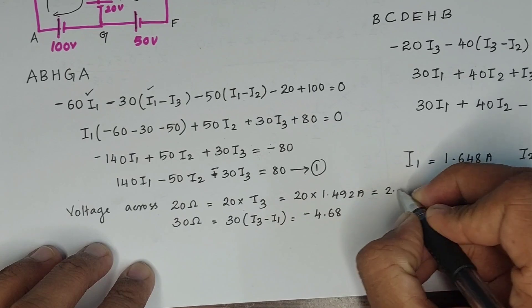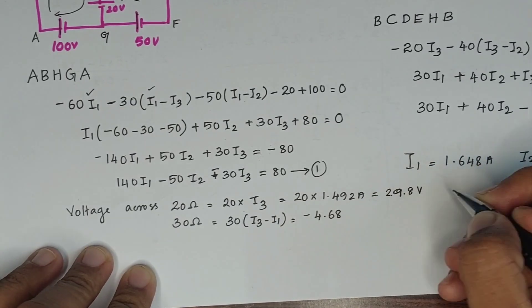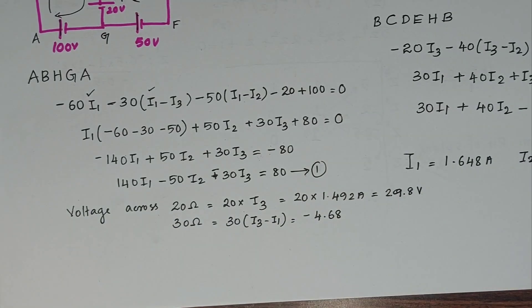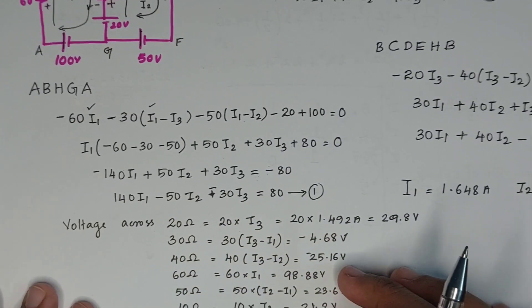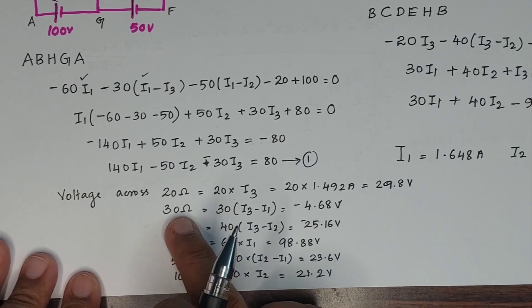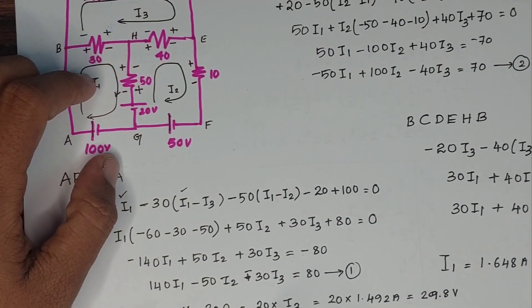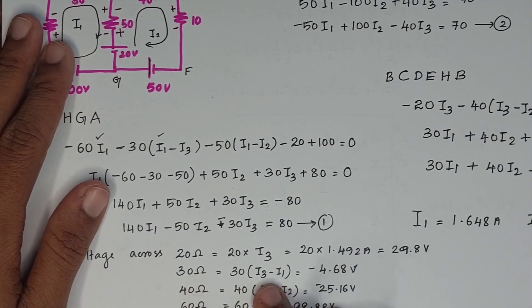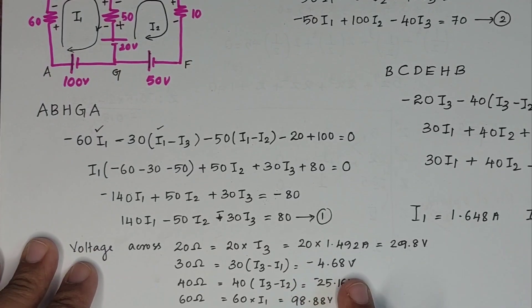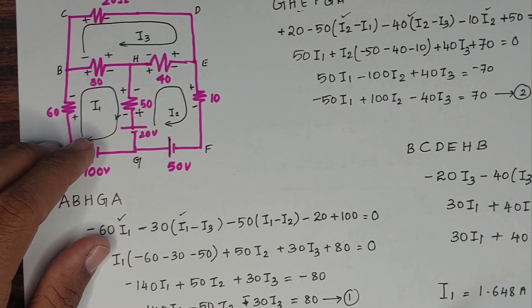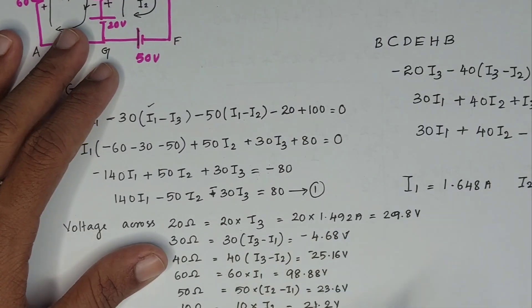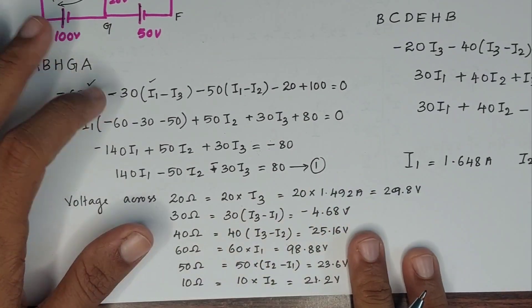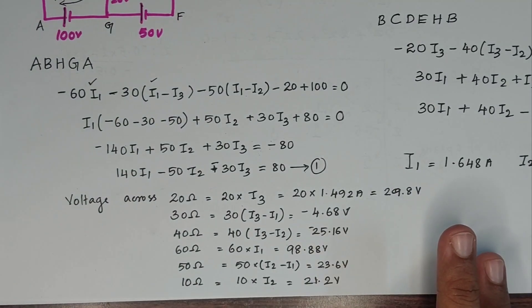The voltage across the 20 ohm resistor is approximately 29.8 V. Using the current values and the resistor we can verify the result. Using I3 minus I1 and I1 minus I3 terms as needed gives us the final answer of about negative 4.68 V for another branch.